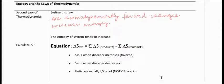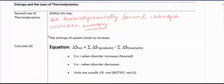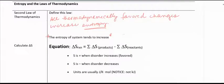There are a couple laws of thermodynamics that we need to apply to entropy. One is the second law of thermodynamics. It says that all thermodynamically favored changes increase the entropy, which basically means that the entropy of the system tends to increase. So that tells us that a positive delta S, an increase in delta S, is going to be favored.